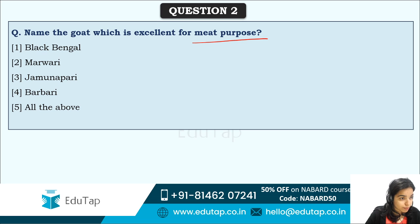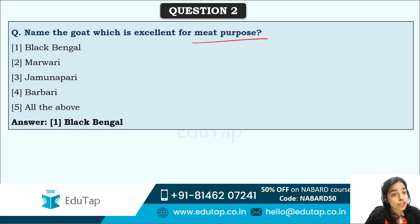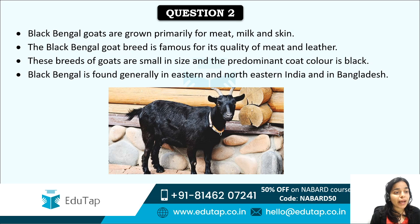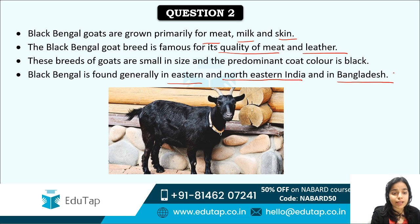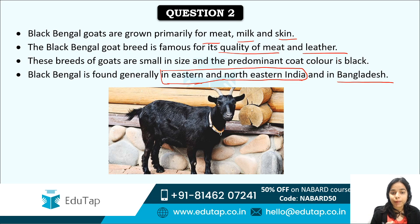The correct answer is option one, Black Bengal. Black Bengal is the breed of goat which is excellent for meat purpose. Black Bengal goats are grown primarily for meat, milk, and skin, and they are famous for quality of meat and leather. They are generally found in eastern and northeastern India and in Bangladesh.